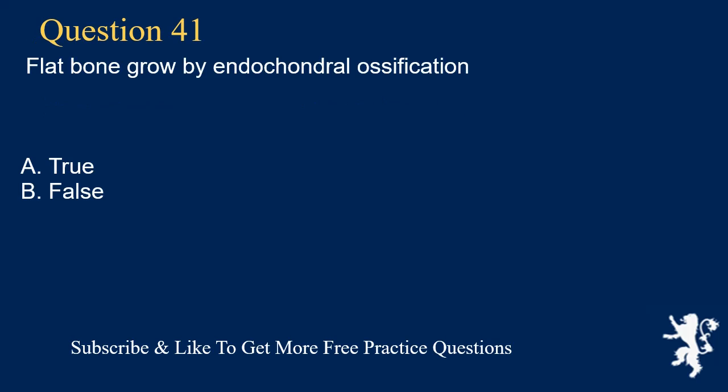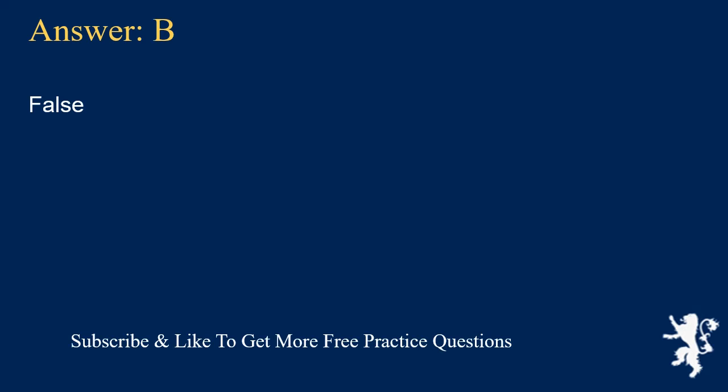Question 41. Flat bone grows by endochondral ossification: A. True, B. False. Answer: B. False.